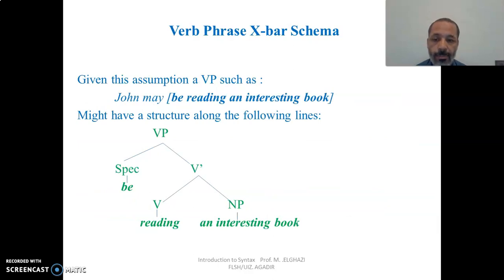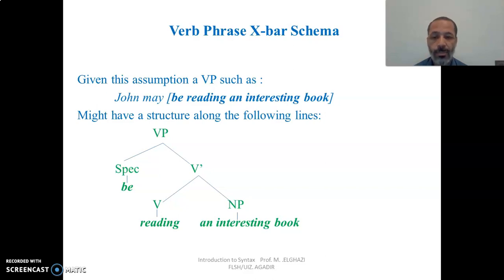Given this assumption, a VP such as 'John may be reading an interesting book' might have the following structure. The head is the verb 'reading,' inserted under the node V. The complement is 'an interesting book,' a noun phrase. The specifier is the auxiliary 'be.' So 'be reading an interesting book' constitutes the structural representation under the X-bar schema.